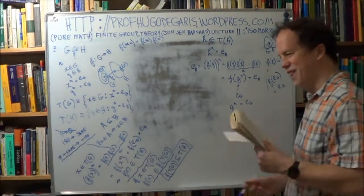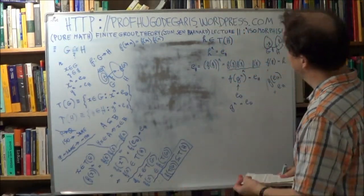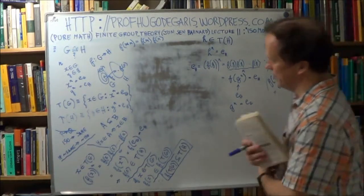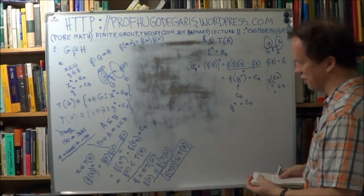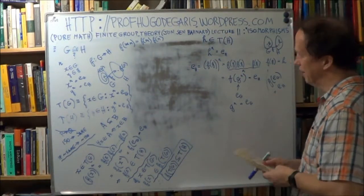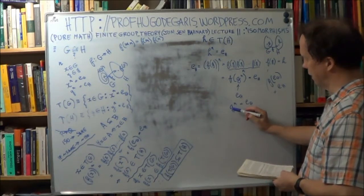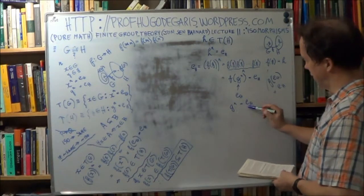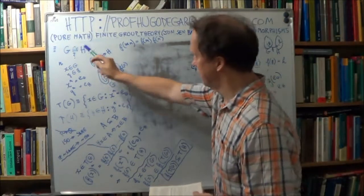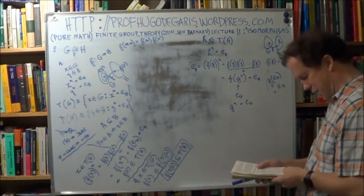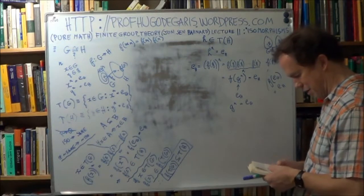Now there are a lot of steps in this reasoning. The person who dreamt this up — I take my hat off to them. Quite ingenious. Okay, so now we've proved that g to the n is equal to the unit of this group.